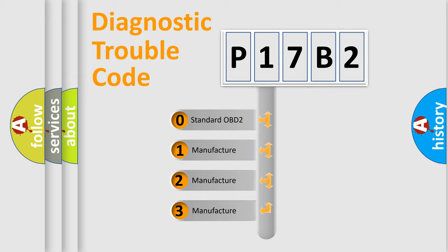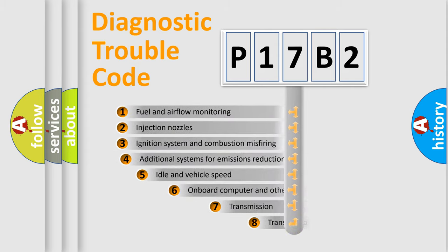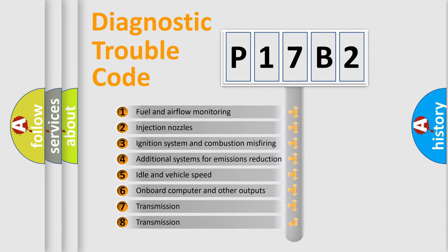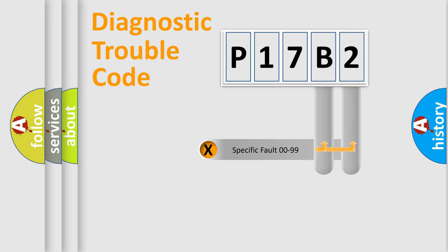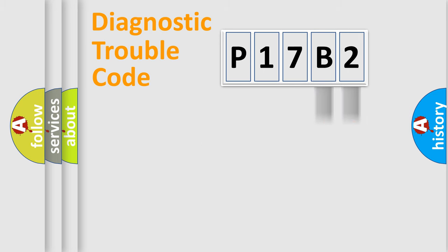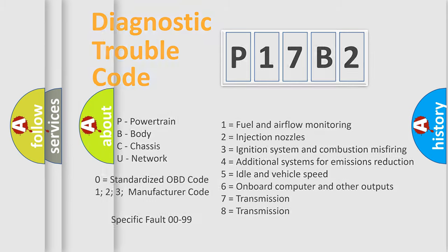If the second character is expressed as zero, it is a standardized error. In the case of numbers 1, 2, or 3, it is a more specific expression of a car-specific error. The third character specifies a subset of errors. This division is valid only for the standardized DTC code, and only the last two characters define the specific fault of the group.